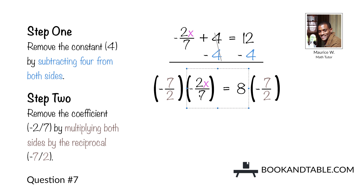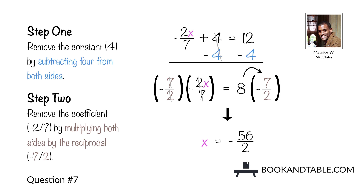Now we want to negate the coefficient negative 2/7. Step two: multiply both sides by the reciprocal, which is negative 7 over 2. The negative times negative gives us positive, so those negate. 7 divided by 7 is 1, and 2 divided by 2 is 1, so we negate the coefficient, leaving us with x on the left side. On the right side, 8 times 7 is 56, giving us negative 56 over 2, which simplifies to x is equal to negative 28.